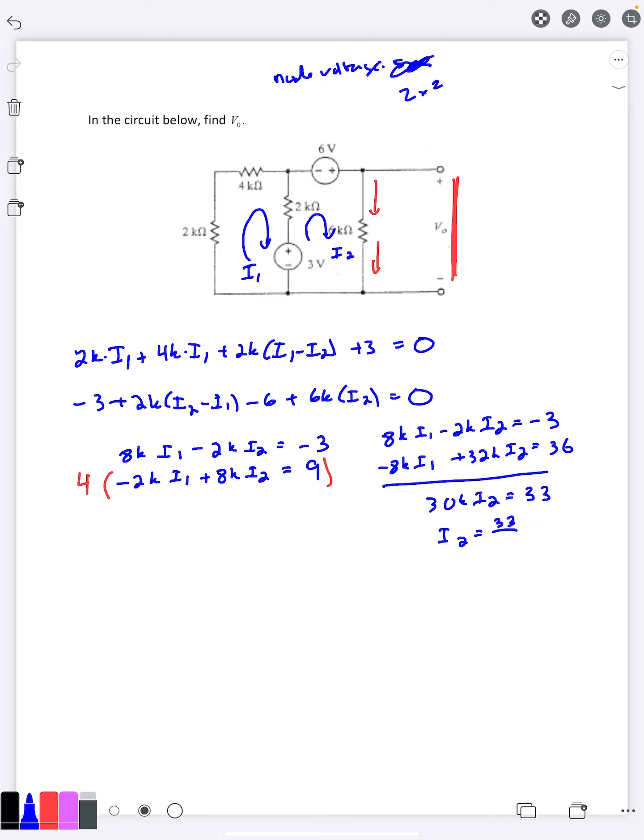And then using Ohm's law, I can find my v0 as 6k times i2. So 6k times 1.1 milliamps, that's going to go to 6.6 volts.